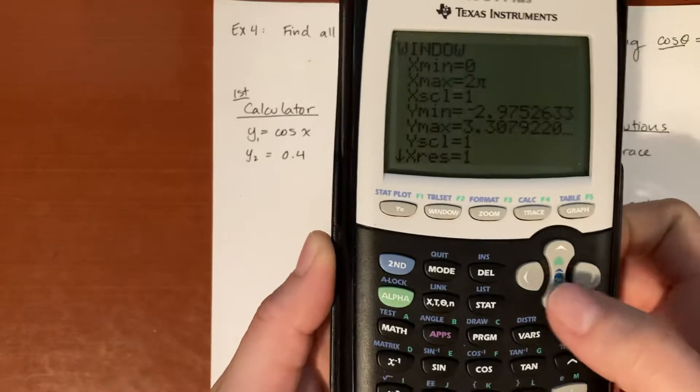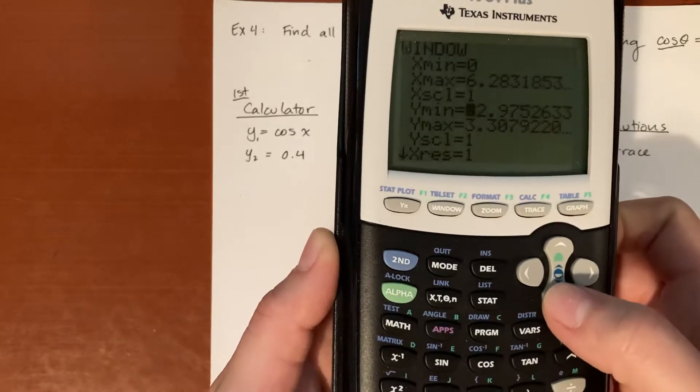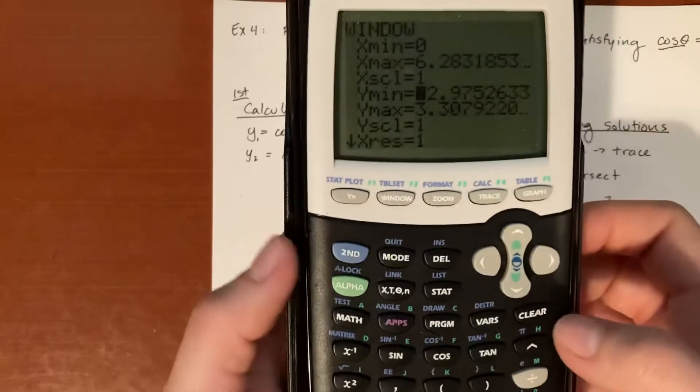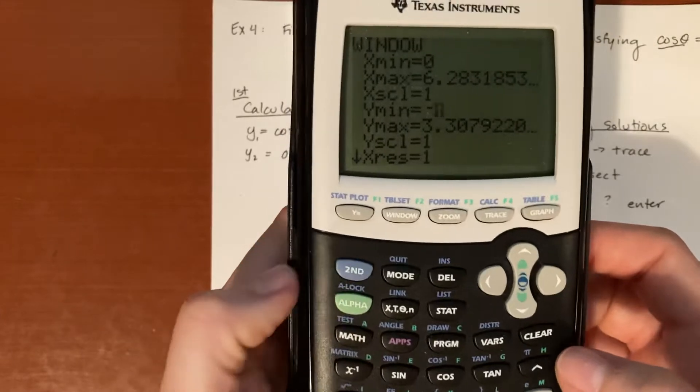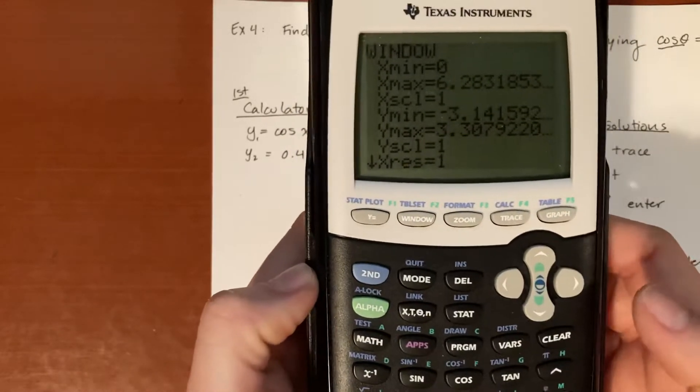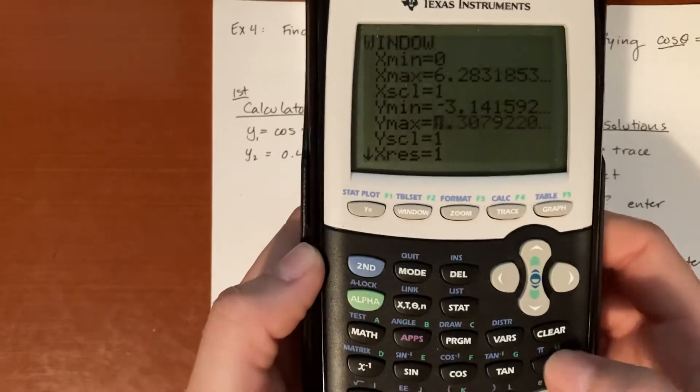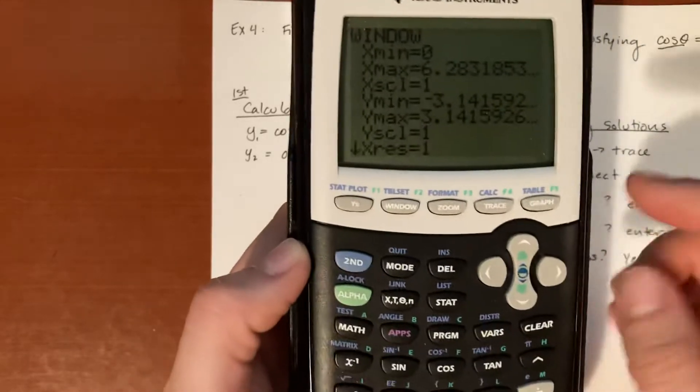And then for your scales, you want to leave x scale as 1. Y minimum, you could go ahead and do negative pi, so negative second pi. And then for x max, you just go ahead and hit second pi, and then scaling wise, 1 is good.